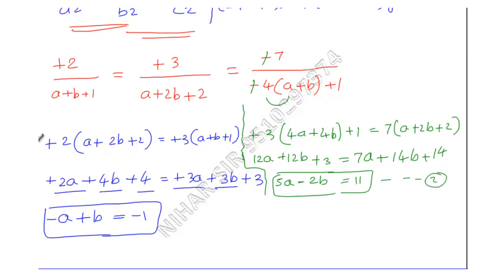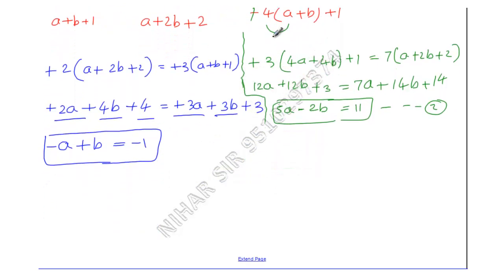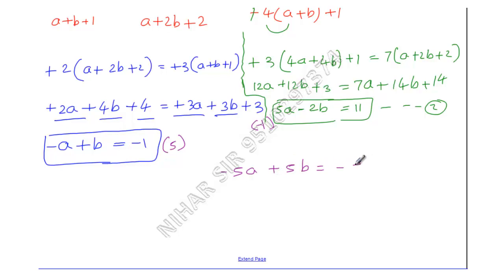Now using the elimination method to solve. Multiply Equation 1 by 5, because the coefficient of A in Equation 2 is 5. Multiply Equation 2 by -1. Equation 1 × 5 gives: -5A + 5B = -5. Equation 2 × -1 gives: -5A + 2B = -11.